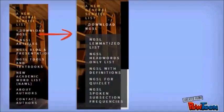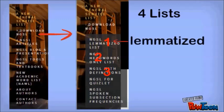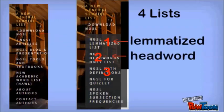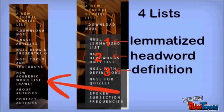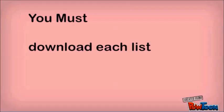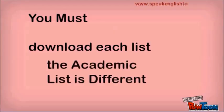The download has four lists that you can download: the lemmatized list, the headword list, the definition, and the academic list. The academic list has three lists. You must download each list individually. The academic list downloads differently.